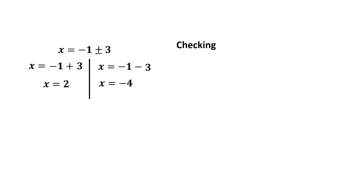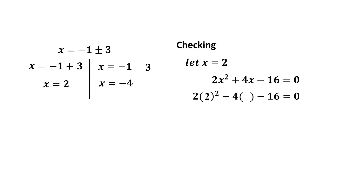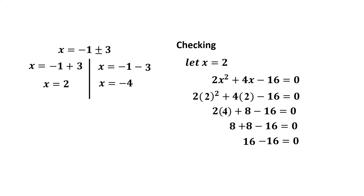Let's check. In checking, we determine if the value of x is a solution of the equation or not. Let x = 2. Using the original equation 2x² + 4x - 16 = 0, substitute x = 2: 2(4) + 8 - 16 = 0; 8 + 8 - 16 = 0; 16 - 16 = 0; 0 = 0. Therefore, 2 is a solution of 2x² + 4x - 16 = 0.